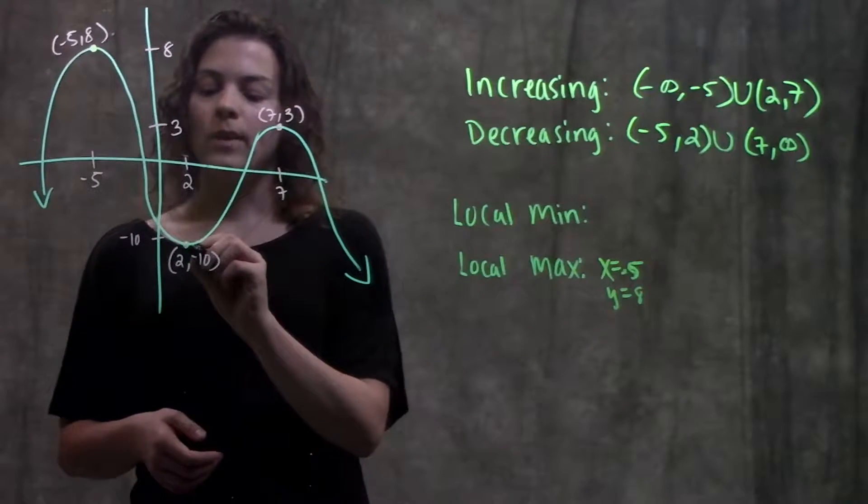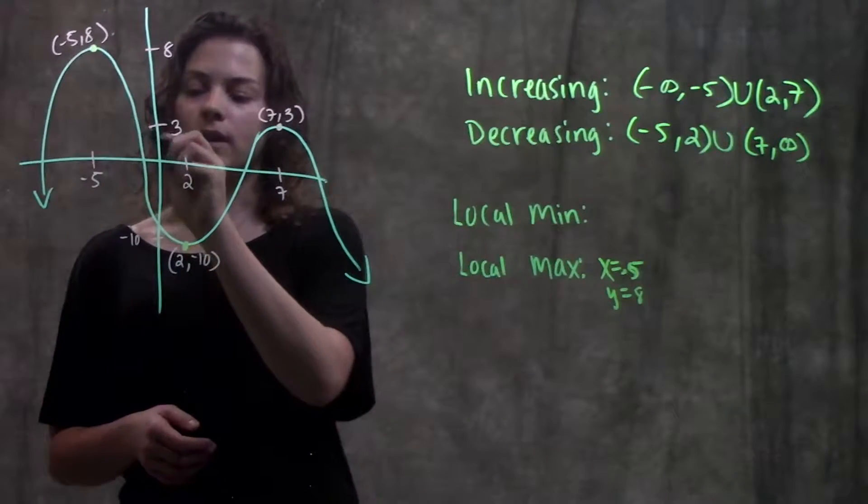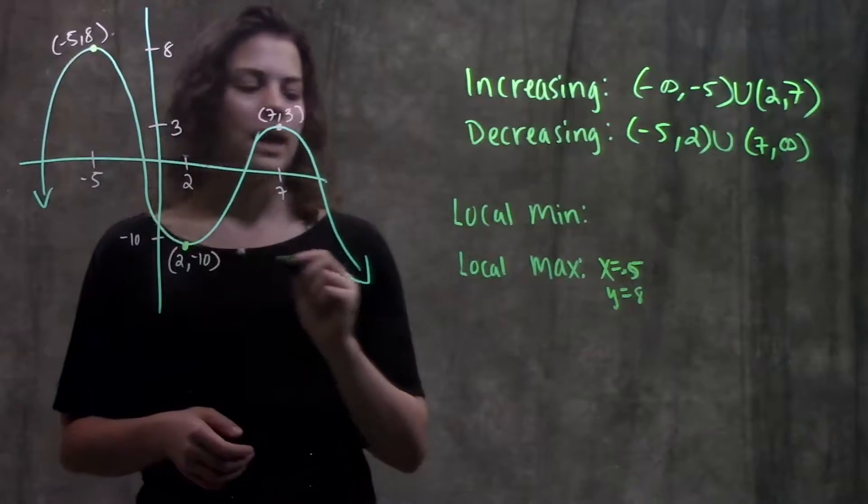We go down here and we have a minimum right here where the function changes from decreasing to increasing. Our minimum happens at x equals 2 and y equals negative 10.